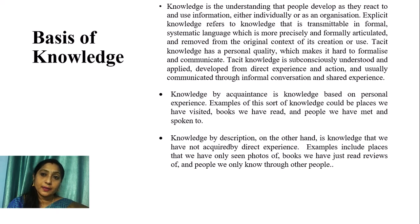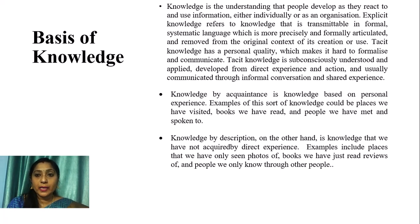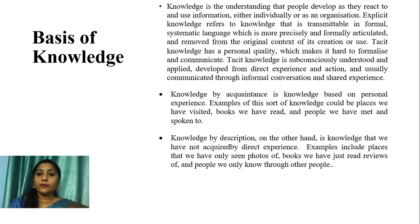Knowledge is the understanding that people develop as they react to and use information, either individually or as an organization. Explicit knowledge refers to knowledge that is transmittable in formal, systematic language — more precisely and formally articulated. Tacit knowledge has a personal quality which makes it hard to formalize and communicate. It is subconsciously understood and applied, developed from direct experience and action, and usually communicated through informal conversation and shared experience.